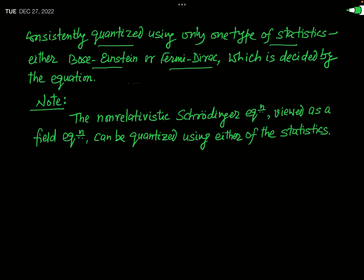An important point: the non-relativistic Schrödinger equation, which is also viewed as a field equation, can be quantized using either the Bose-Einstein statistics or the Fermi-Dirac statistics. This is a very remarkable fact. A relativistic wave equation can be quantized by only one type of statistics, but the non-relativistic Schrödinger equation can be quantized using either Bose-Einstein or Fermi-Dirac statistics.